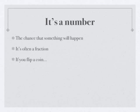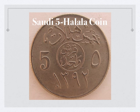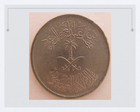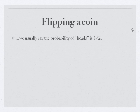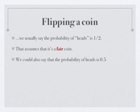For example, if you flip a coin — here is a Saudi Five Halala coin. This is heads, though it may not be obvious, and this is tails. So if you're flipping a coin, we usually say the probability of heads is one-half. That assumes it's a fair coin. We could also say that the probability of heads is 0.5 — that's a half — or that the probability of heads is 50%.